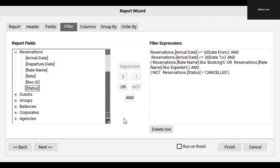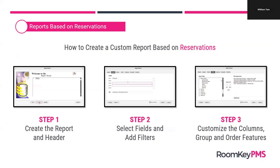That is a pretty complex filter, but I used it as an example because it takes you through a couple of different components. We have those prompts — the date from and date to — so when generating this report, the user selects a date range to see all arrivals within it. I've used an OR statement so Roomkey looks for reservations with a rate name like Booking.com or like Expedia. I've also told Roomkey to filter out any reservations in cancelled status.